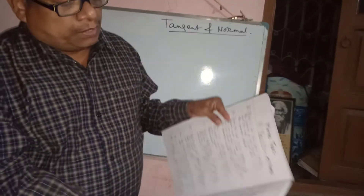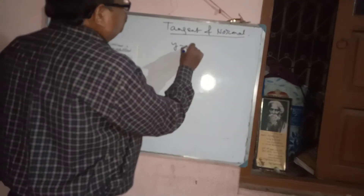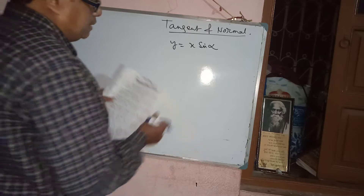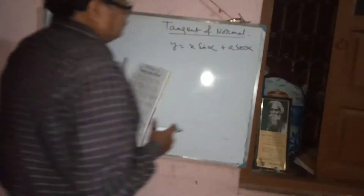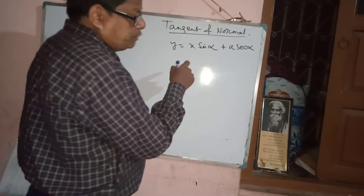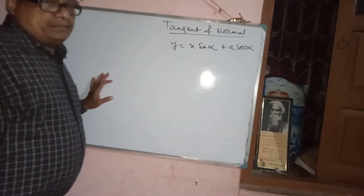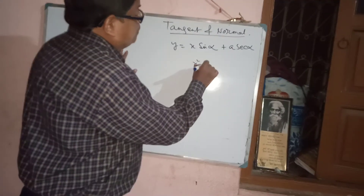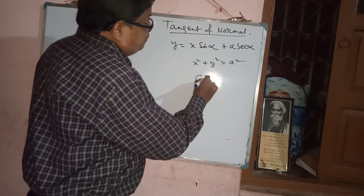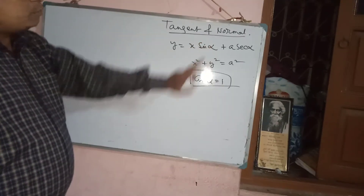Now, one very important question: show that the line y = x sinα + a secα is a tangent to the circle x² + y² = a². Then prove that cos²α = 1. We know that for y = mx + c, this line will be a tangent to x² + y² = a² if c = ±a√(1 + m²). This is the shortcut method.